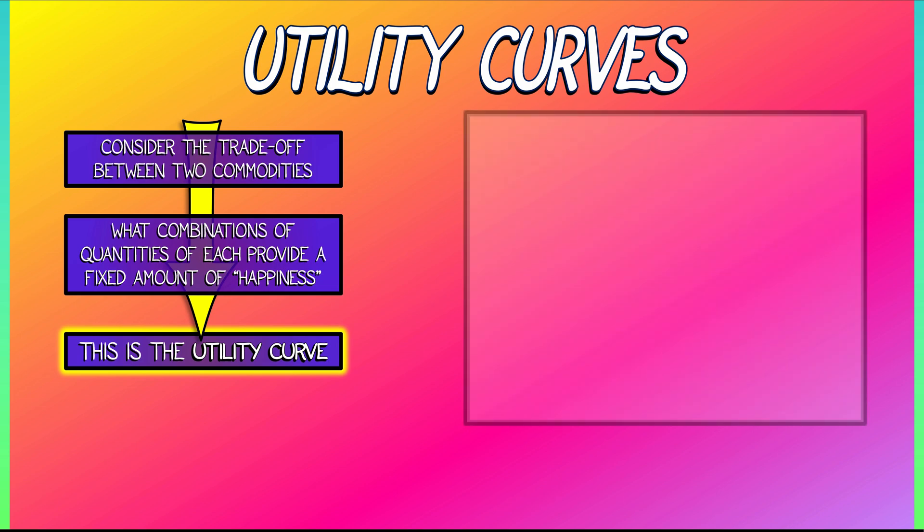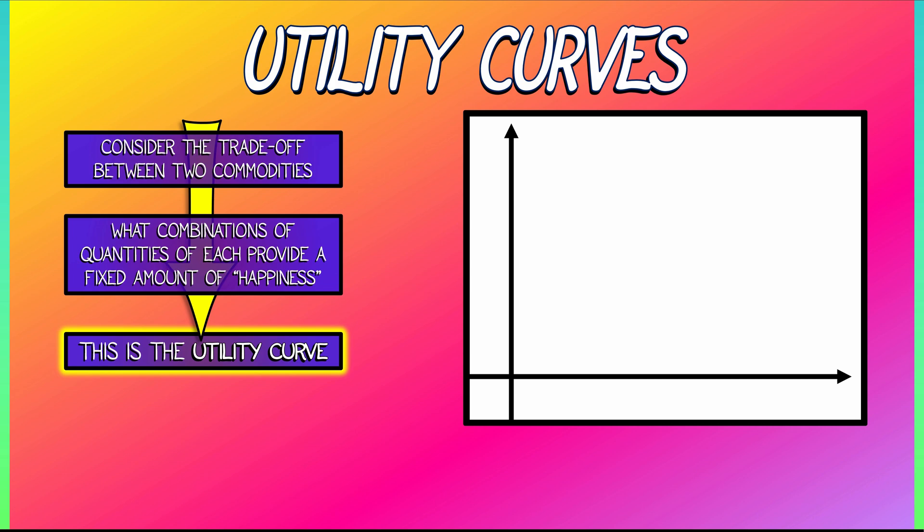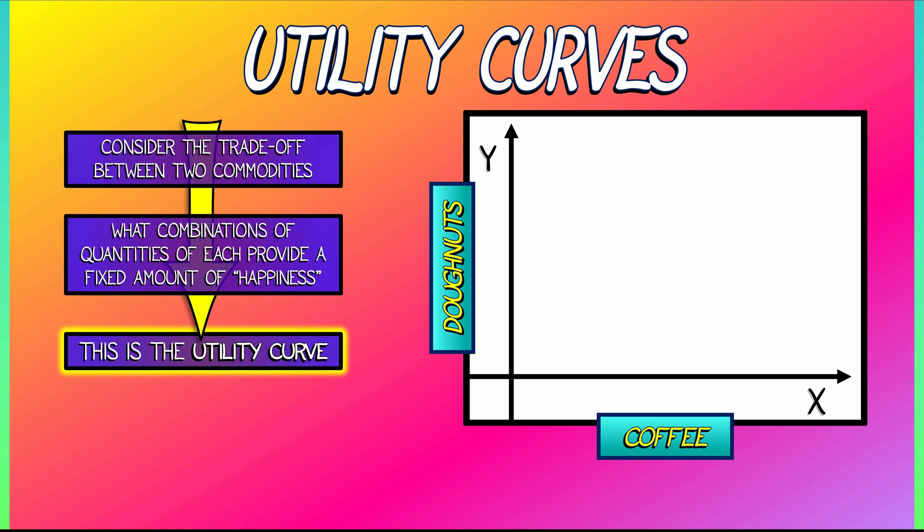So let's draw a curve. Let's work in the plane, the XY plane, where X and Y are quantities of these two commodities. Let's say X could be coffee and Y could be donuts, or rather the amount of coffee and the amount of donuts.